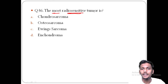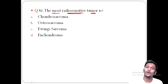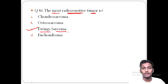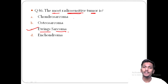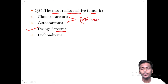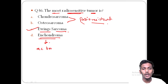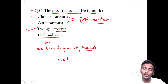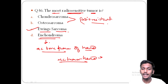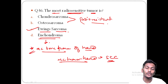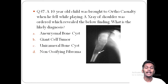Question 36 asks for the most radiosensitive bone tumor. The answer is option C — Ewing's sarcoma. Please remember Ewing's sarcoma is the most radiosensitive and chemosensitive bone tumor. Osteosarcoma and chondrosarcoma are the most radioresistant bone tumors. Enchondroma is the most common bone tumor of the hand. If asked the most common tumor of the hand overall, that would be squamous cell carcinoma (skin cancer), but the most common bone tumor of the hand is Enchondroma.